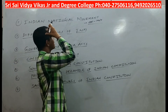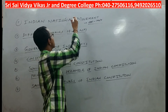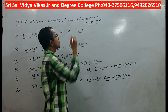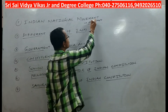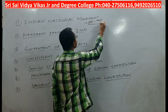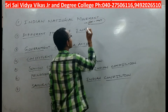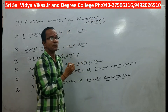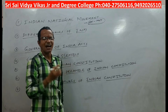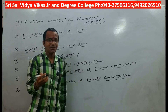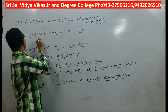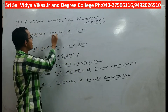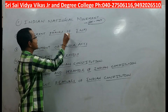Further causes include English education, press repressive acts and policies of the Britishers, racial discrimination, and the formation of the Indian National Congress. These are the basic causes for the occurrence of the National Movement during this period.